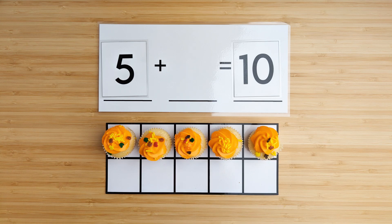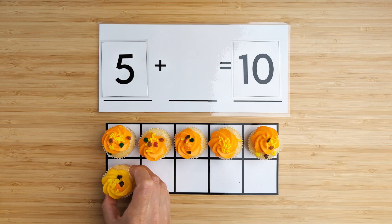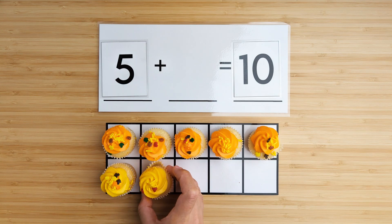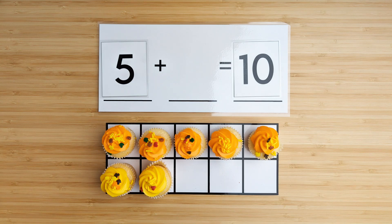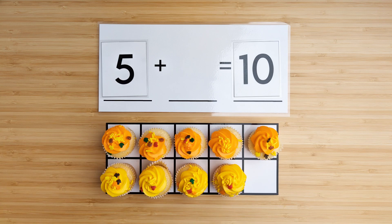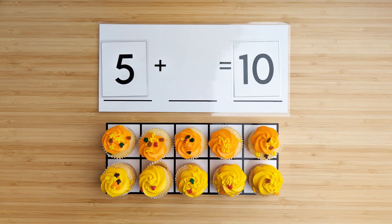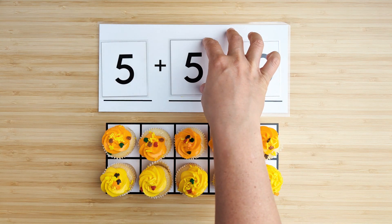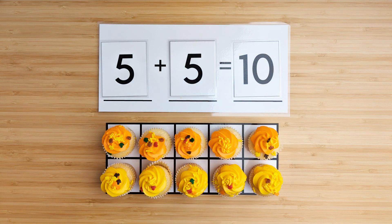Let's find out. One, two, three, four, five. There are five yellow cupcakes. Five and five make 10.